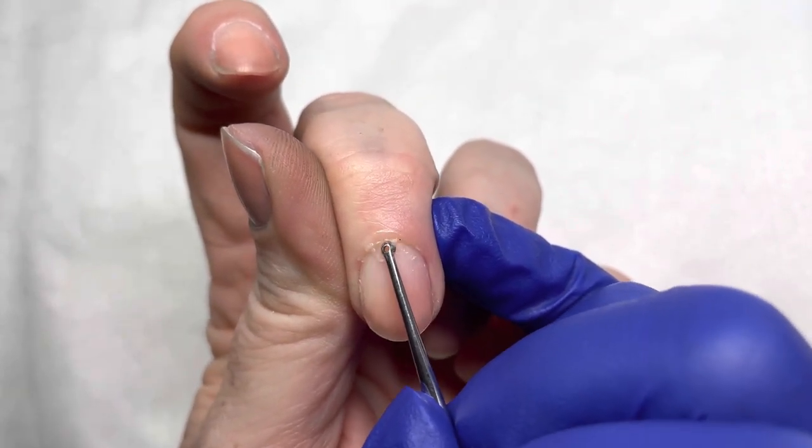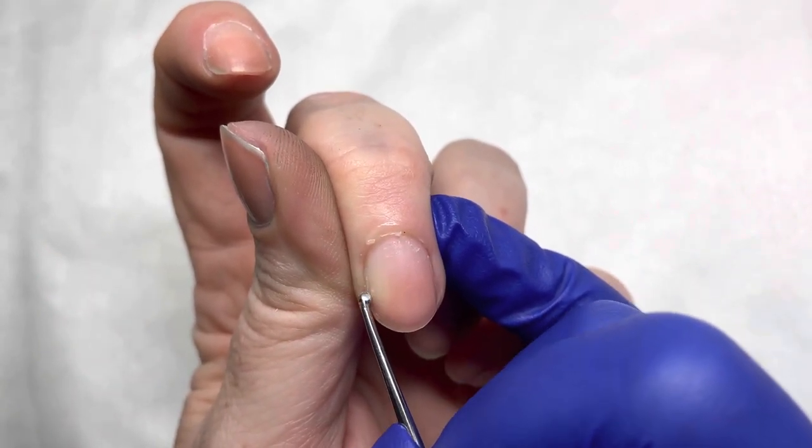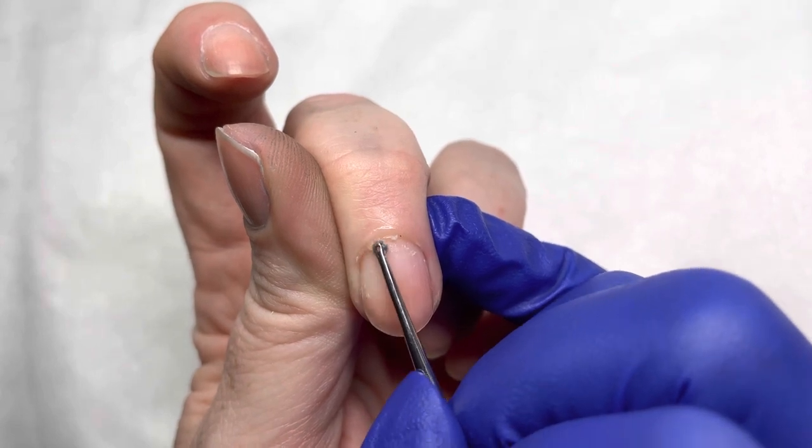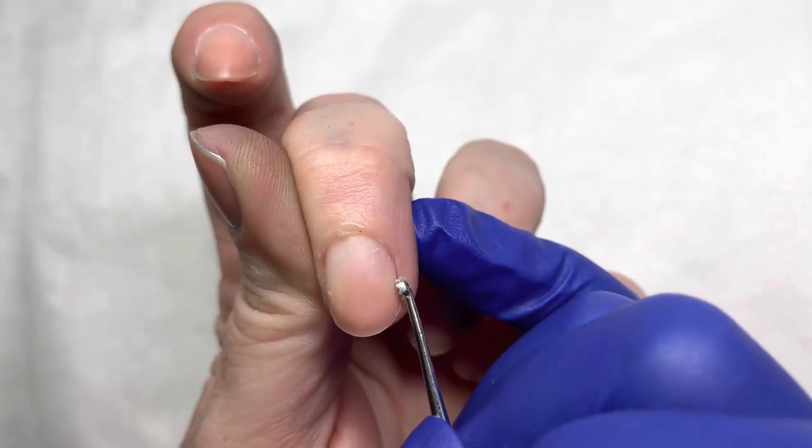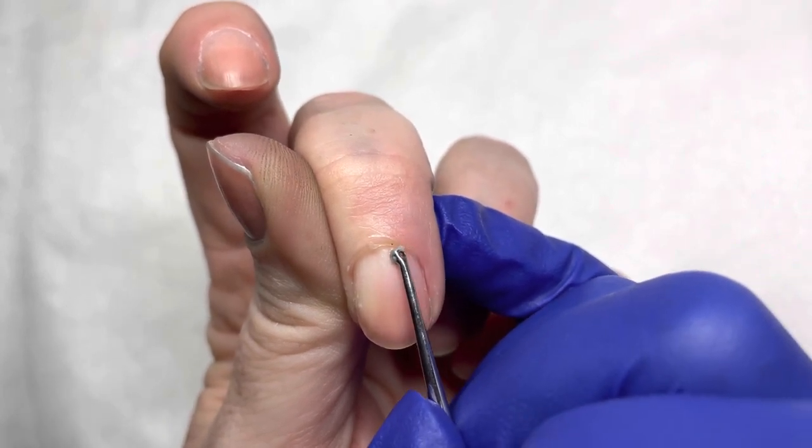I prefer a curette. It's like a little power tool that gets in the corners and the sides and just removes that last little bit of hidden cuticle that clings to the corners and the sides.